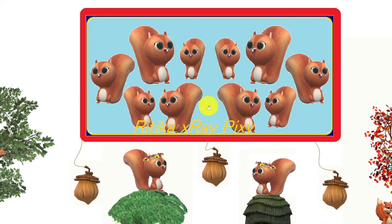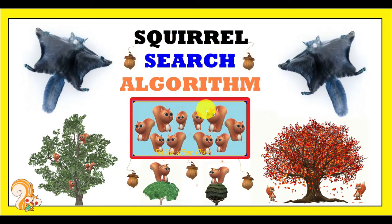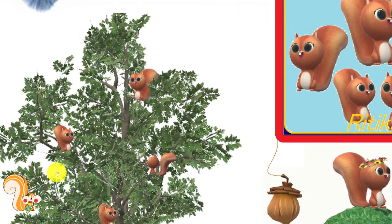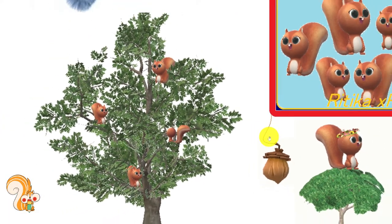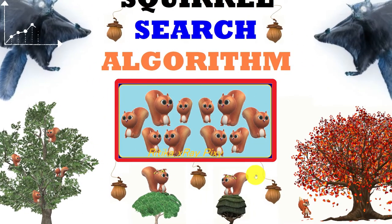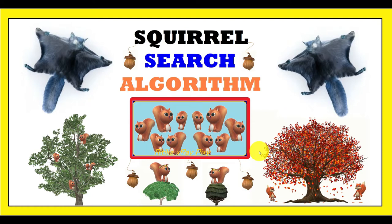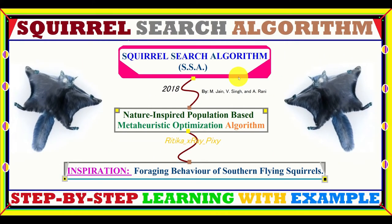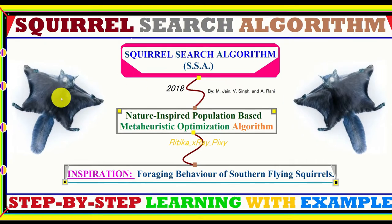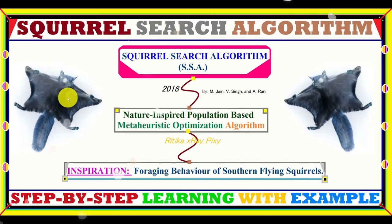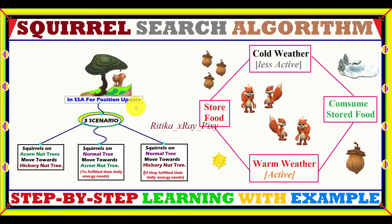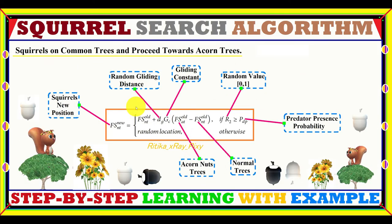This video is based on a new metaheuristic optimization algorithm named the Squirrel Search Optimization Algorithm. We can use this algorithm to solve different optimization problems, as it provides efficient results for uni-modal, multi-modal, and multi-dimensional optimization problems. In this video, we will try to understand this algorithm step by step with mathematical models and random examples.